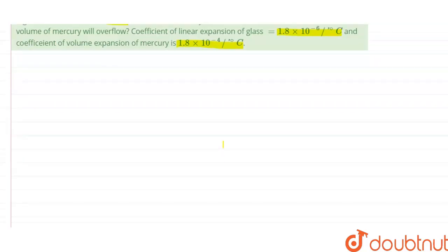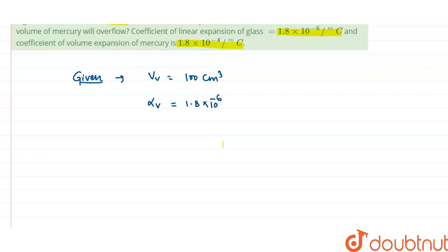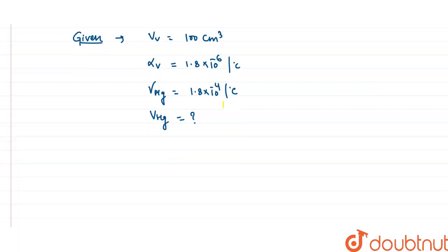Let's start the solution by writing the given things. The volume of the vessel is 100 centimeter cube. The coefficient of linear expansion, alpha, is 1.8 into 10 to the power minus 6 per degree centigrade. The coefficient of volume expansion for mercury, gamma_Hg, is 1.8 into 10 to the power minus 4 per degree centigrade. The temperature difference delta T equals 75 minus 25, which is 50 degree centigrade.